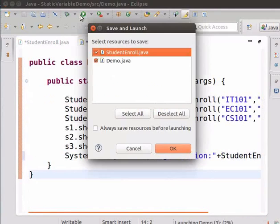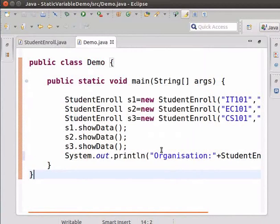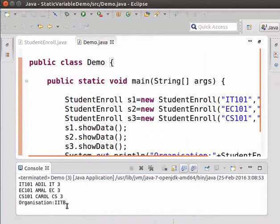Now, run the demo program again. We can see that the organization name is getting printed as IITB.